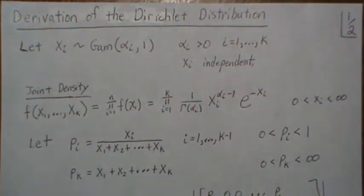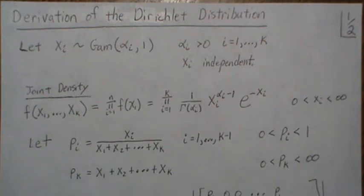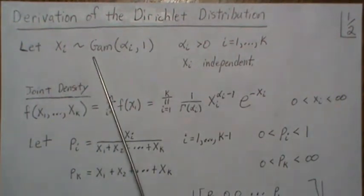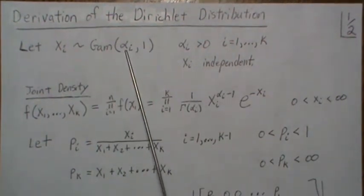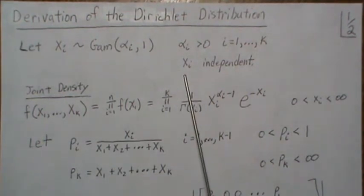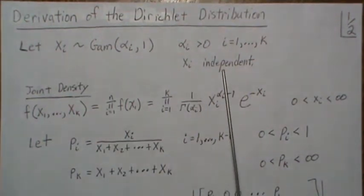Hello, in this video we derive the Dirichlet distribution from scratch. So let's let Xi be gamma random variables with alpha i and beta one. The alpha i's are greater than zero and we're going to assume the Xi are independent.